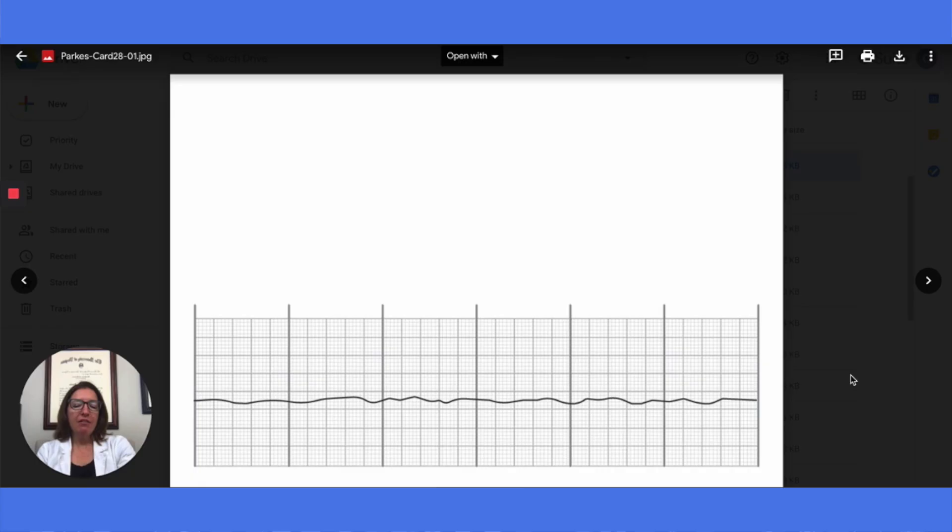Finally here we have asystole. This is the rhythm you never want to see on your patient, but you always want to see on your exam because it's pretty easy to pick out. This is asystole. The heart rate is zero. There's no atrial or ventricular heart rhythm. There's no P wave. There's no QRS complex. You will need to perform CPR on a patient with asystole pronto.